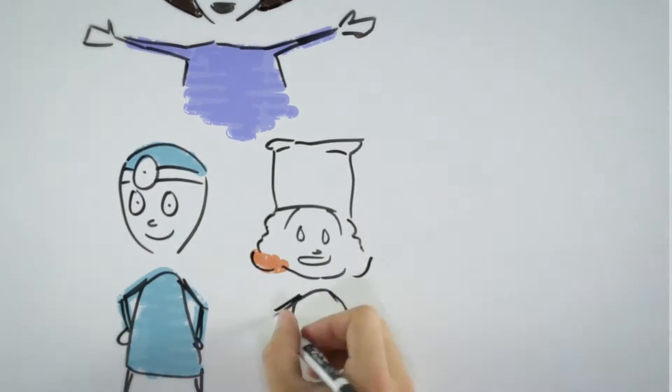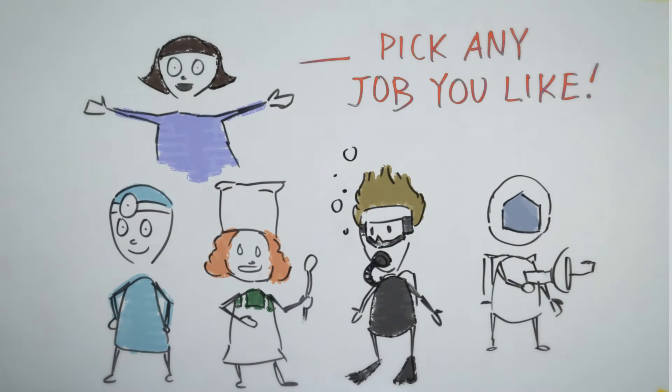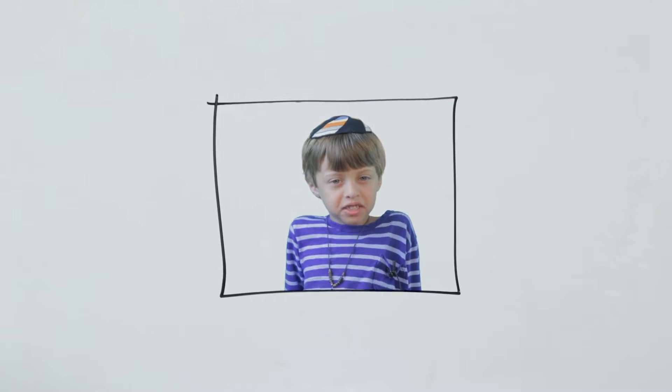Today, my teacher asked us what we want to be when we grow up. She said we could pick any job we like. I want to be a scientist. I want to be an innovator. I want to be an entrepreneur. I want to be an engineer.